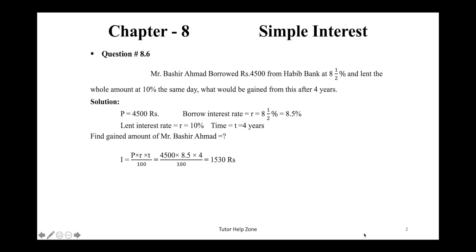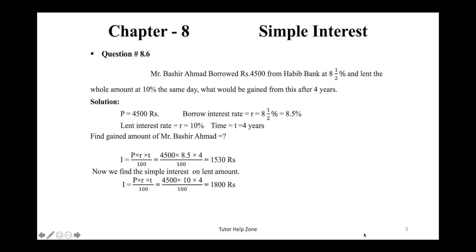Here we have used the amount that Mr. Bashir Ahmed borrowed from Habib Bank. Now we find the simple interest on the lent amount at 10 percent. Again, I = P × R × T ÷ 100. I will just change the value of R to 10 percent and put the values. The answer is Rs. 1800.